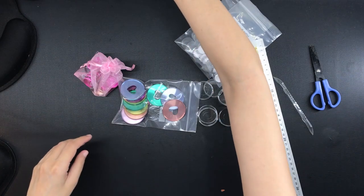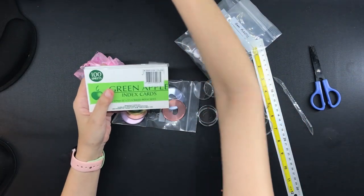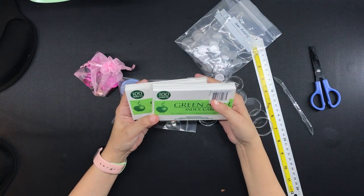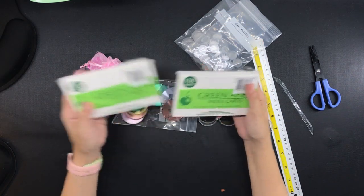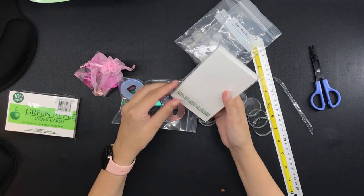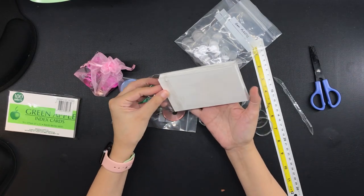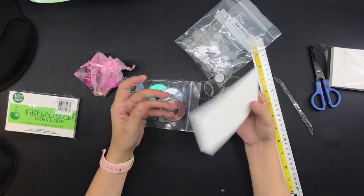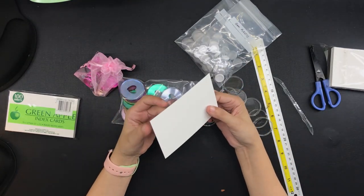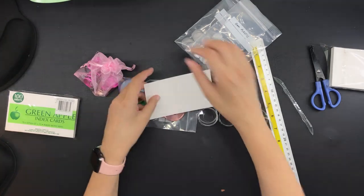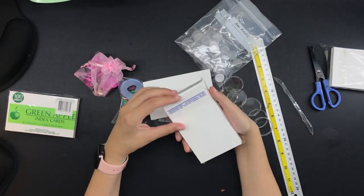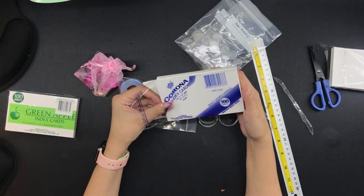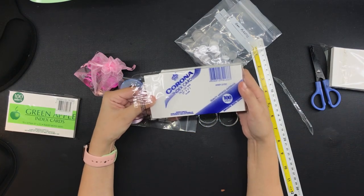And the index cards that I will be using is this one pack of 3x5 index cards right here. It is the Green Apple brand and this pack has 100 pieces. This wasn't available in any local store in my city so I had to purchase this online. I will leave a link in the description box. Take note that I am in the Philippines and the shopping app that I use is called Shopee and it's only available in Asia I believe.